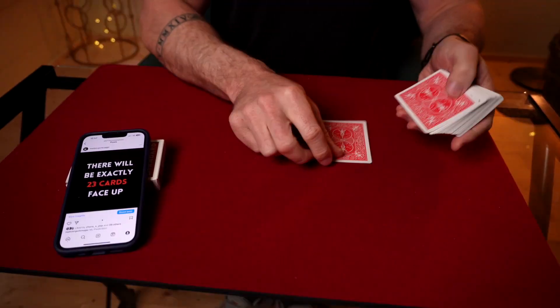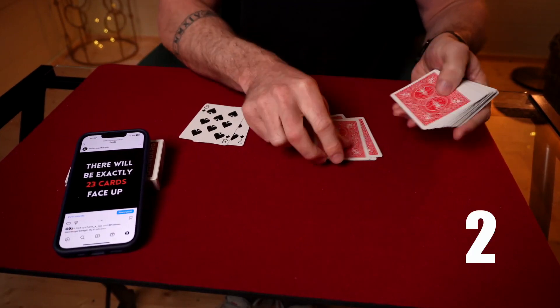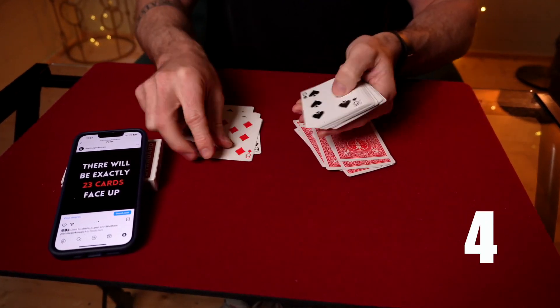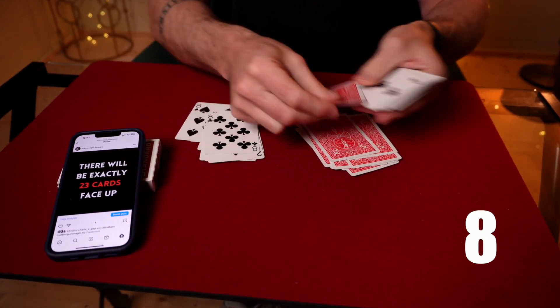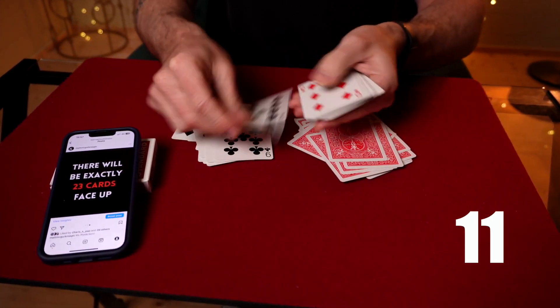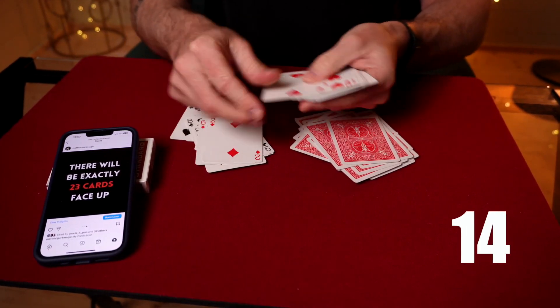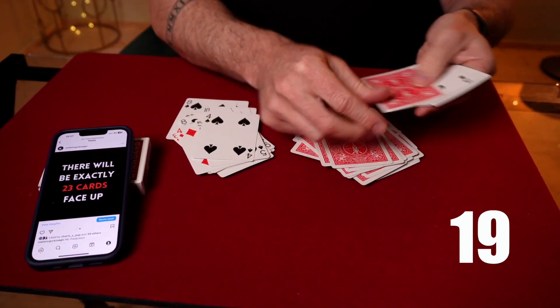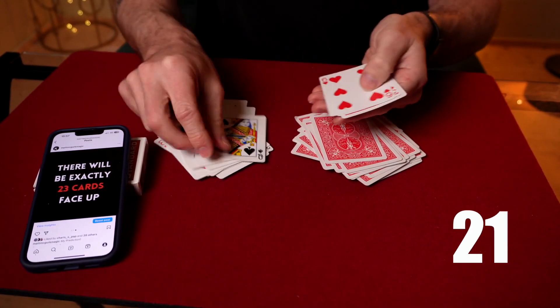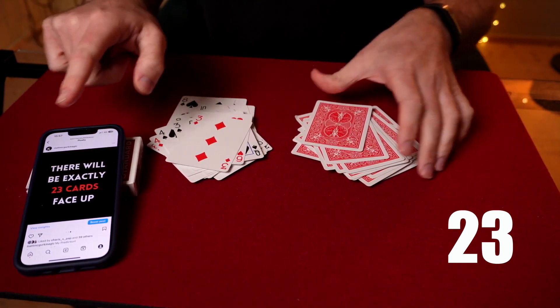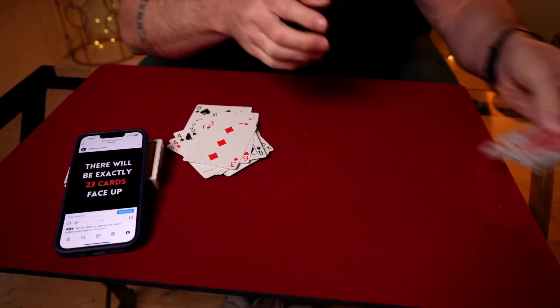Look, that's one, two, three, four, five, six, seven, eight, nine, ten, eleven, twelve, thirteen, fourteen, fifteen, sixteen, seventeen, eighteen, nineteen, twenty, twenty-one, twenty-two, exactly 23 cards face up. How crazy is that?